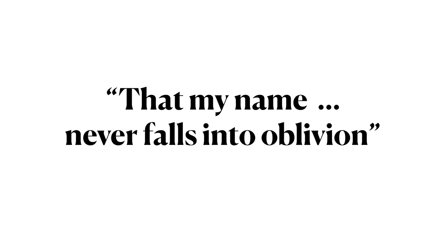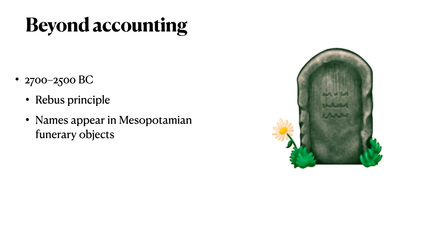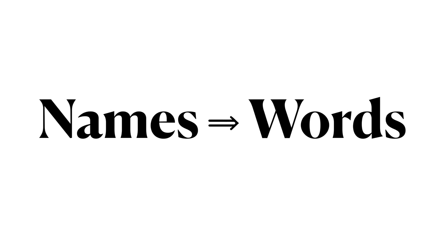We know that over time, technology develops to meet needs. In ancient Mesopotamia, approximately 4,500 years ago, there was a societal need to record names — and thus we go beyond accounting. Around 2500 BC, names inscribed using the Rebus Principle began to appear in Mesopotamian funerary objects. And once writing became a medium for recording names, not just counting materials, it was then a short step to go from using the Rebus Principle to record names to using it to record other words.